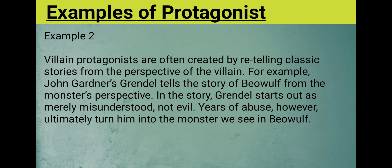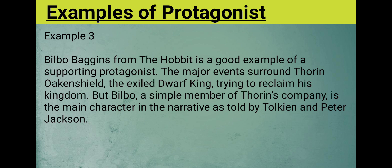However, years of abuse ultimately turn him into the monster we see in Beowulf. A third example: Bilbo Baggins from The Hobbit is a good example of a supporting protagonist. The major events surround Thorin Oakenshield, the exiled dwarf king trying to reclaim his kingdom, but a simple member of Thorin's company is the main character, as the narrative is told by Tolkien and Peter Jackson.